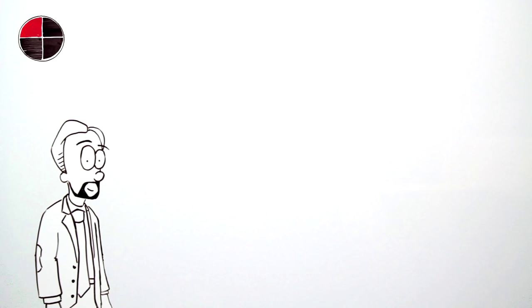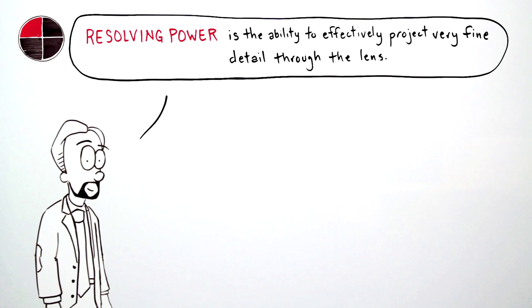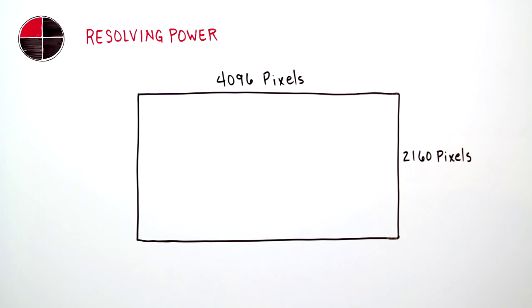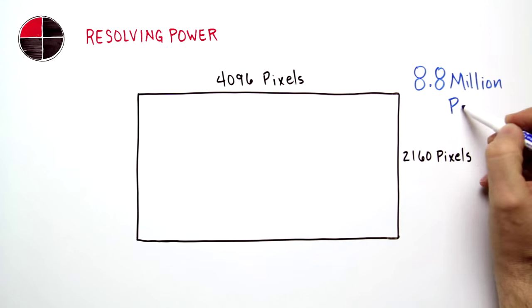Let's start with lens resolving power, the ability to effectively project very fine detail through the lens. High resolving power is needed to take full advantage of a 4K camera, with its nearly 9 million pixels.